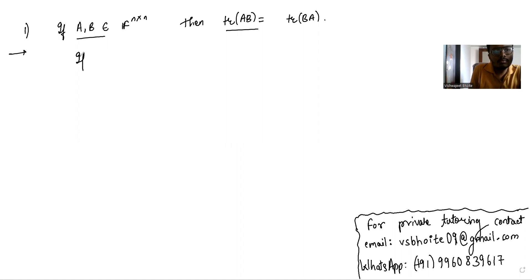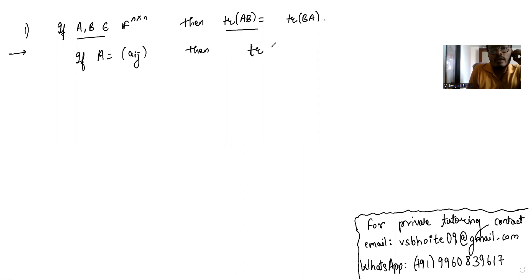If A is a matrix given by a_{ij}, then the trace of A is basically the sum of diagonal entries, which is summation a_{ii} where i goes from one to n.